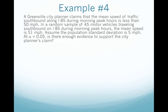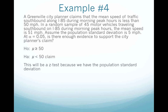Let's do another one. A Greenville city planner claims that the mean speed of traffic southbound along I-85 during morning peak hours is less than 50 mph. In a random sample of 45 motor vehicles traveling southbound on I-85 during morning peak hours, the mean speed is 51 mph. Assume the population standard deviation is 5 mph. At alpha equals .05, is there enough evidence to support the city planner's claim? The claim is that mean speed is less than 50 mph, so we start with the alternative: mu is less than 50. It is the alternative because it is a strict inequality, and it is the claim because we are reading it. The null is the opposite: mu greater than or equal to 50.